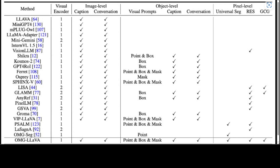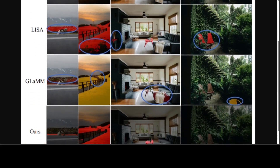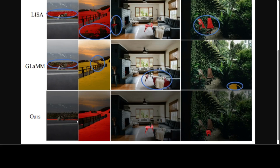Compared to models like GLAM and AnyRef, OMG-LLaVA features an elegant and simple system architecture with only a single visual encoder. In the qualitative comparison on the referring expression segmentation task, LISA uses a 13 billion LLM, while GLAM and OMG-LLaVA use only a 7 billion LLM. You can already see the quality difference — the last result shown is OMG-LLaVA.